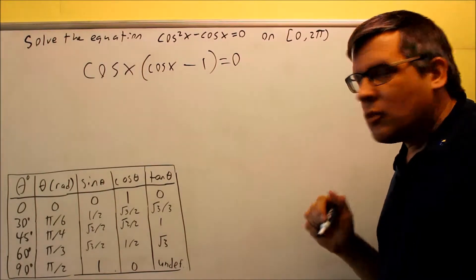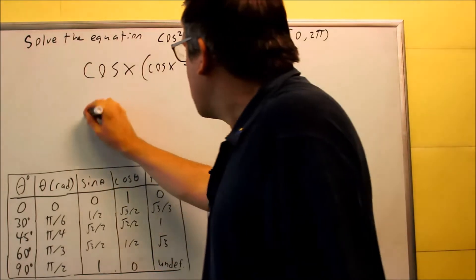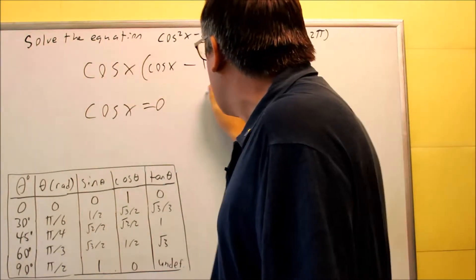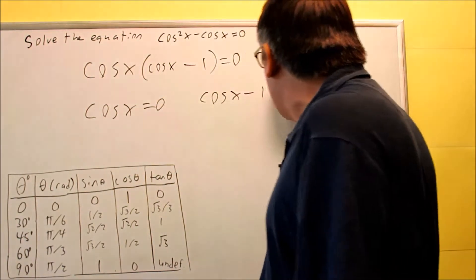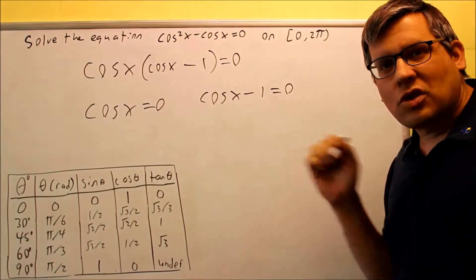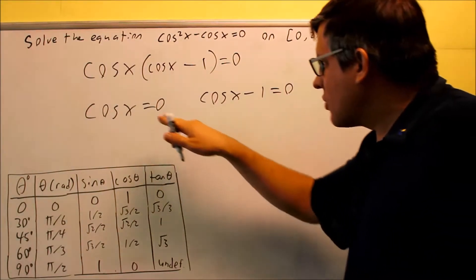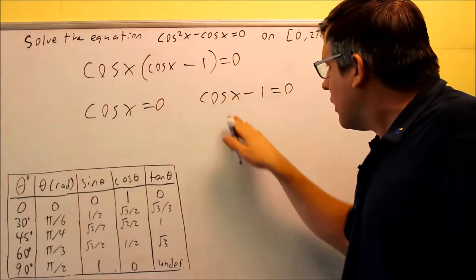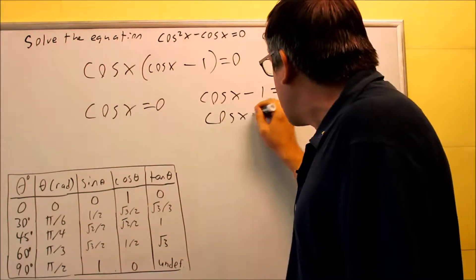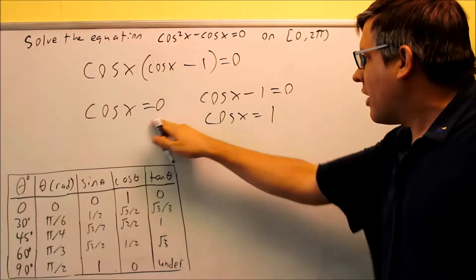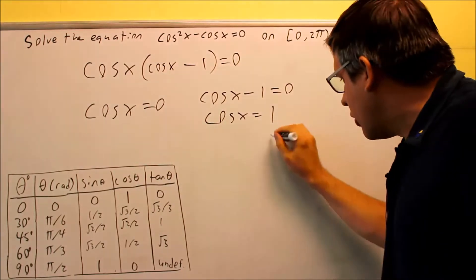What we need to do now is set both of these individually equal to zero. You get cosine x equals zero and cosine x minus one equals zero and you're going to solve for both of those individually. Then we're going to solve this one, cosine x equals one. So now I have both of these.